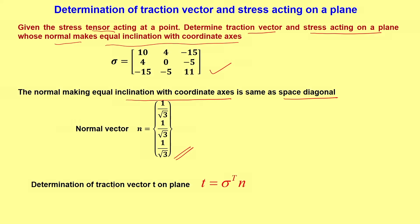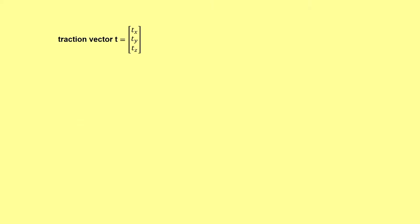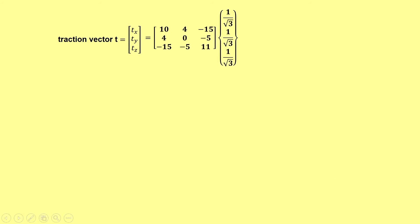The traction vector t is equal to sigma transpose multiplied by n. So traction vector t has components tx, ty, tz, which is equal to the stress tensor multiplied by the normal vector.